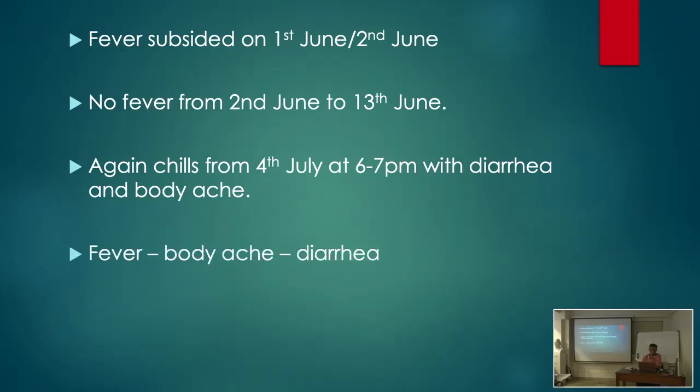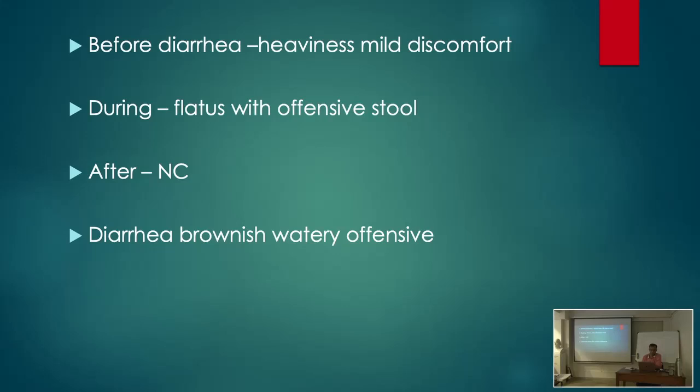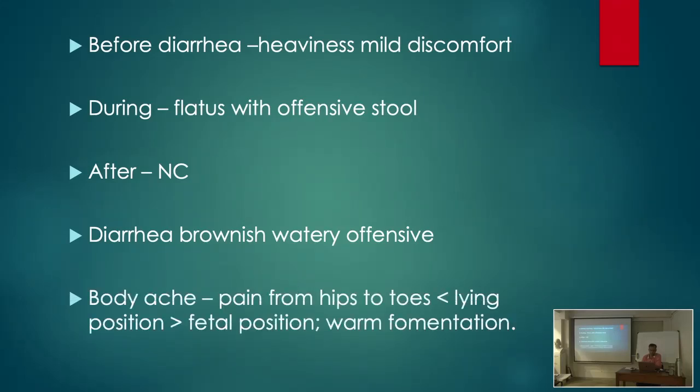With diarrhea and body ache. First was the fever, then body ache, and then the diarrhea. Before diarrhea, some mild discomfort. During diarrhea, some flatus with offensive stools. After diarrhea, no complaints. The stools are brownish, watery, and offensive. Body pain, especially from hips to toes.